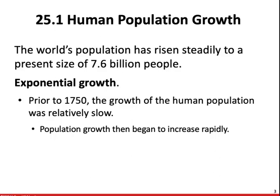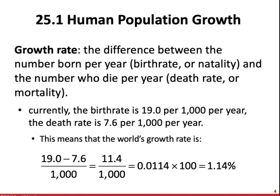Prior to 1750, the growth of the human population was relatively slow, but the population then began to increase very rapidly. The growth rate is the difference between the number of people born per year — the birth rate — and the number of people who die each year, or the death rate.